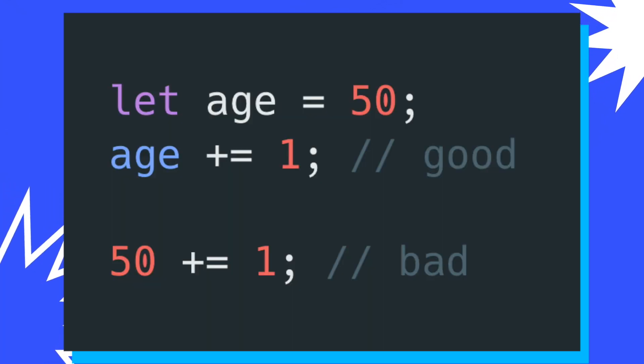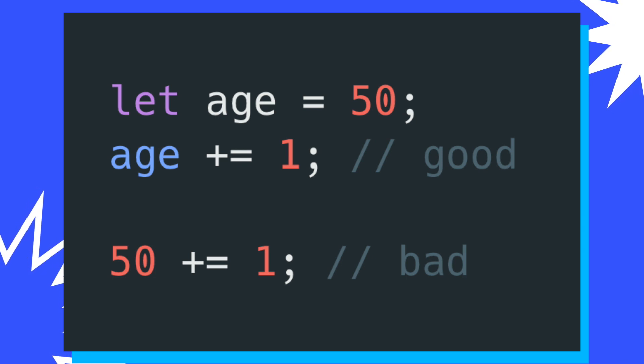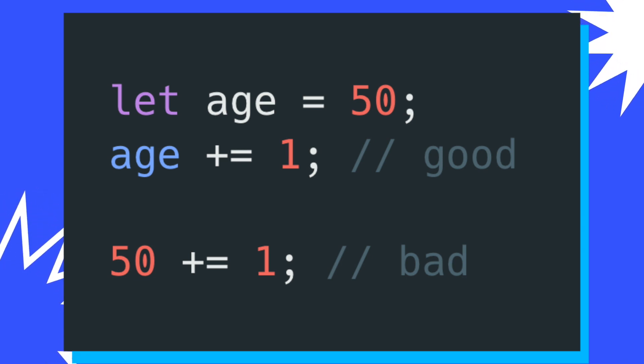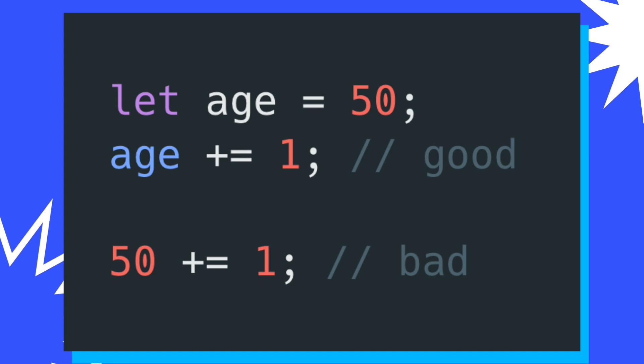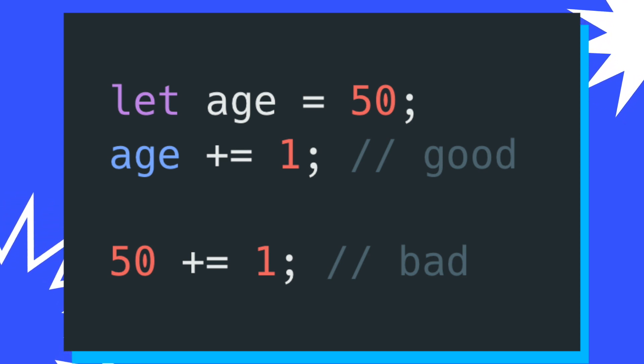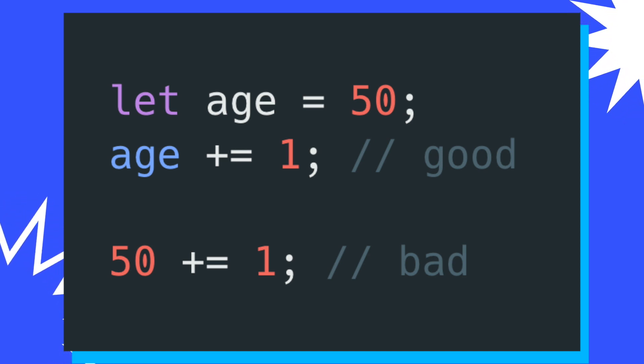One important thing to note about these assignment operators is that on the left-hand side there must be a variable that can take on the new right-hand value's assignment — you can't have standalone values on the left-hand side. The addition and subtraction assignment operators are a direct alternative to the increment and decrement operators, but there are other ways that you can completely avoid these two different types of operators.